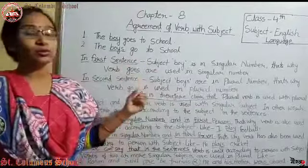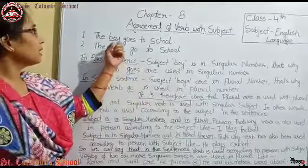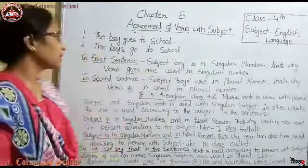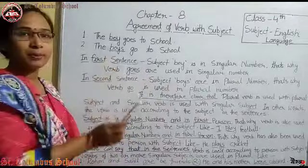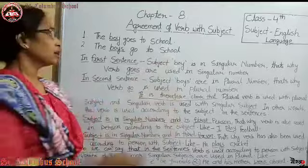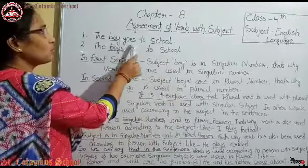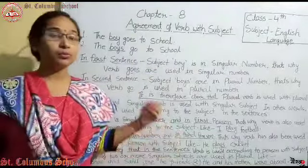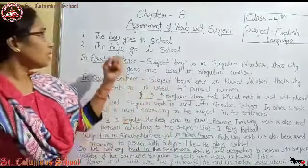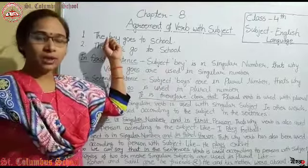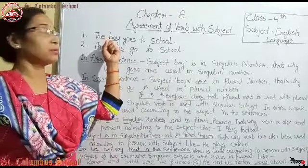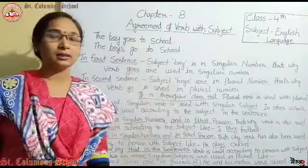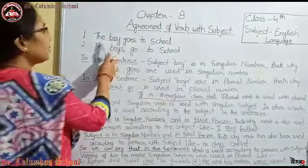हम सबसे पहले example के through समझते हैं। हम example को read करके sentence को read करेंगे, क्योंकि तभी हमें समझ में आएगा। First example is: 'The boy goes to school.' यहाँ पर the boy goes to school, यानि लड़का school जाता है। जब subject singular number में होता है, तो verb भी singular होती है, उसमें S या ES लग जाता है।